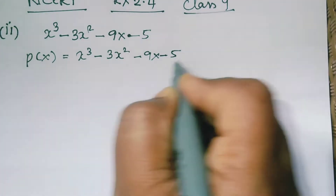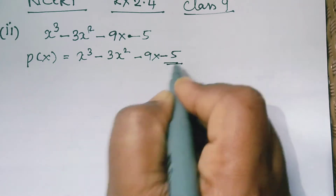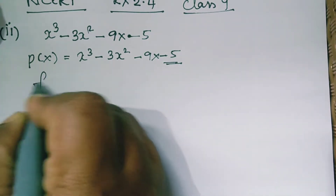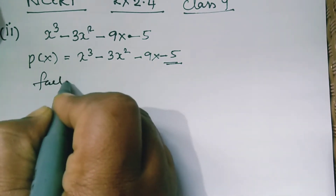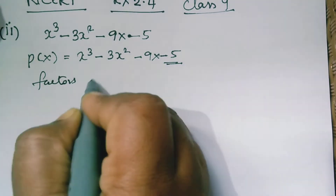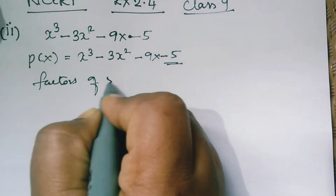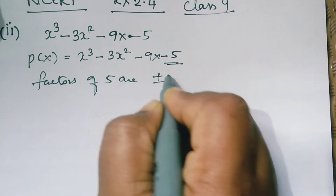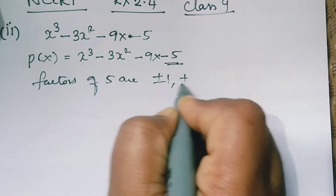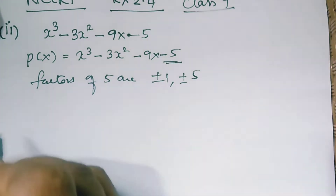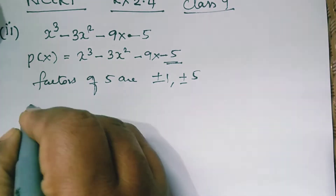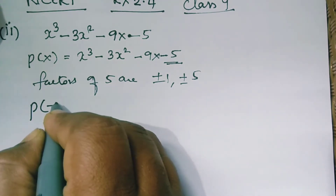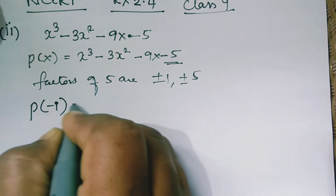In the second question, the polynomial is x cube minus 3x square minus 9x minus 5. First, we have to write down the factors of the constant. Here the constant is 5, so the factors of 5 are plus or minus 1 and plus or minus 5.